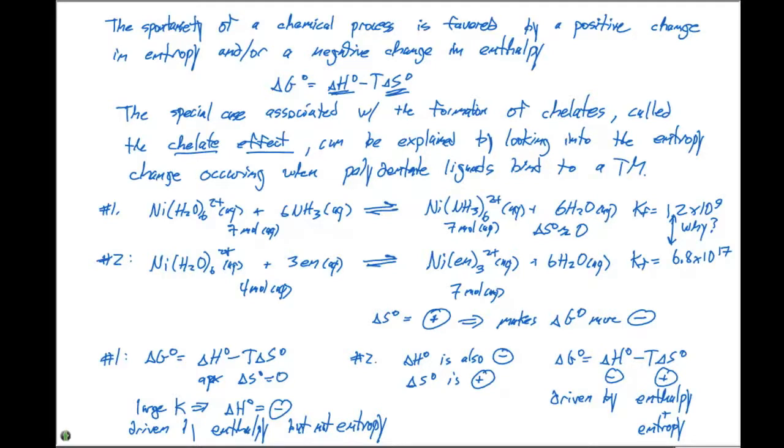If we have a really large value for delta G, the spontaneity of the reaction is going to be driven by both the entropy and the enthalpy. We have that in case number two, whereas in case number one, it's just the delta H that drives the reaction forward. This is why we see a large increase in the KF value or formation constant for this particular reaction.